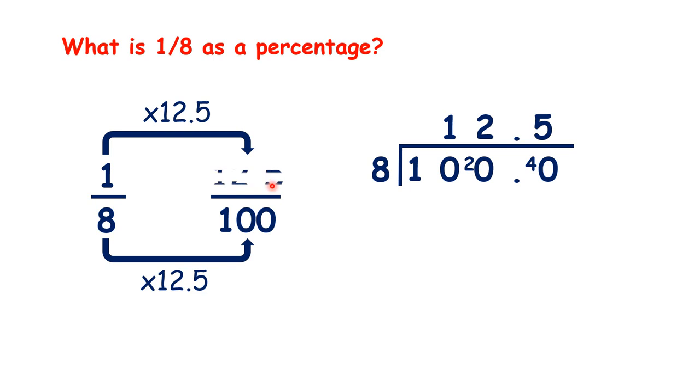1 times 12.5 is of course 12.5. So we have 12.5 over 100, or 12.5%.